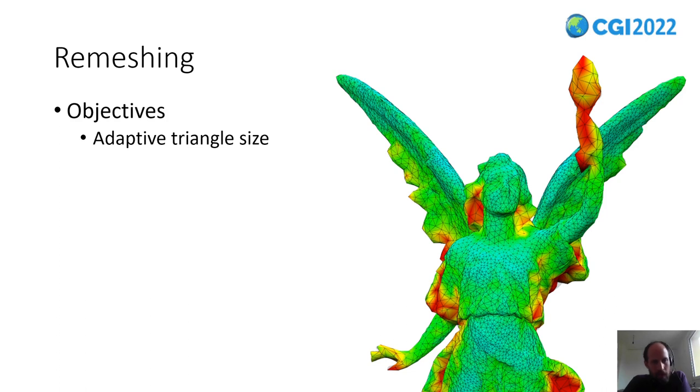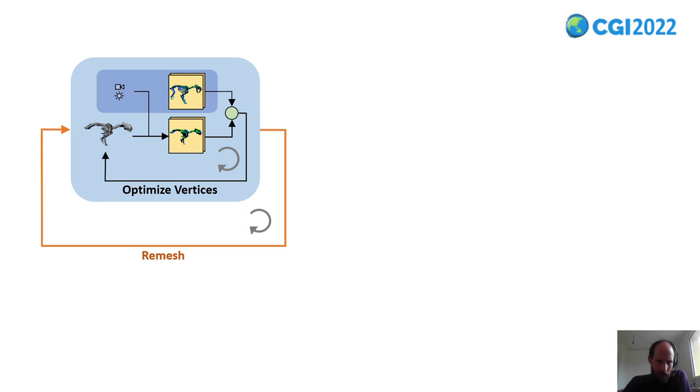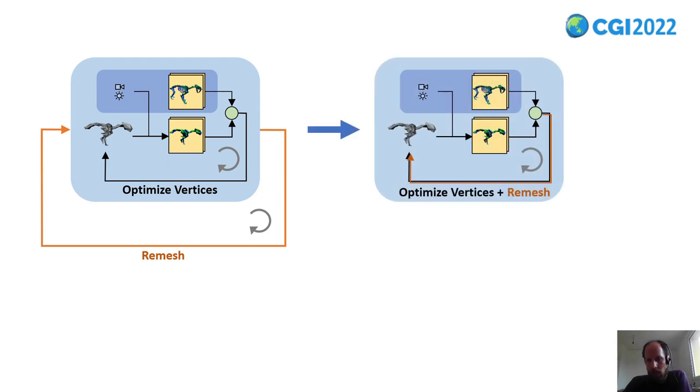Now we can do the actual remeshing. Apart from controlling the triangle size, the objectives are to heal flip triangles or other defects and to keep the mesh well triangulated. We use a standard split, collapse, and flip method for the remeshing. Remember the nested optimization loops that we had before. The idea is to combine both loops and have only one combined loop for optimizing the vertex positions and the remeshing.